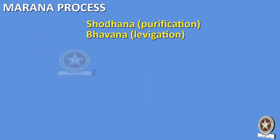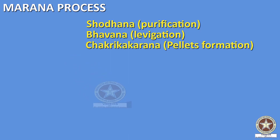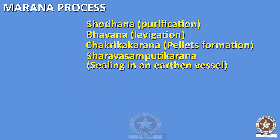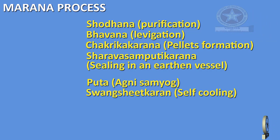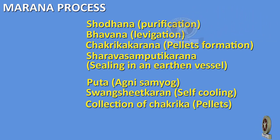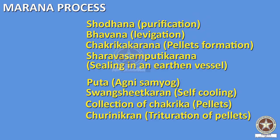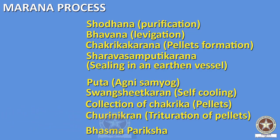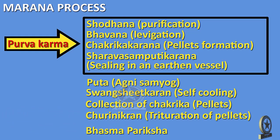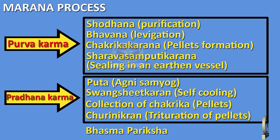The process of Marana includes different steps: first comes Shodhana (purification), then Bhavana (levigation), Chakri Karana (pellet formation), Sharava Samputi Karana (sealing in earthen vessel), followed by Putta (Agni Samyoga — heat treatment), then Swangashiti Karana (self-cooling), collection of Chakrika or pellets, Churni Karana (trituration of pellets to fine powder), and lastly assessment of Bhasma through Bhasma Pariksha. Present day authors classify these steps into Purvakarma, Pradhanakarma, and Paschatkarma.